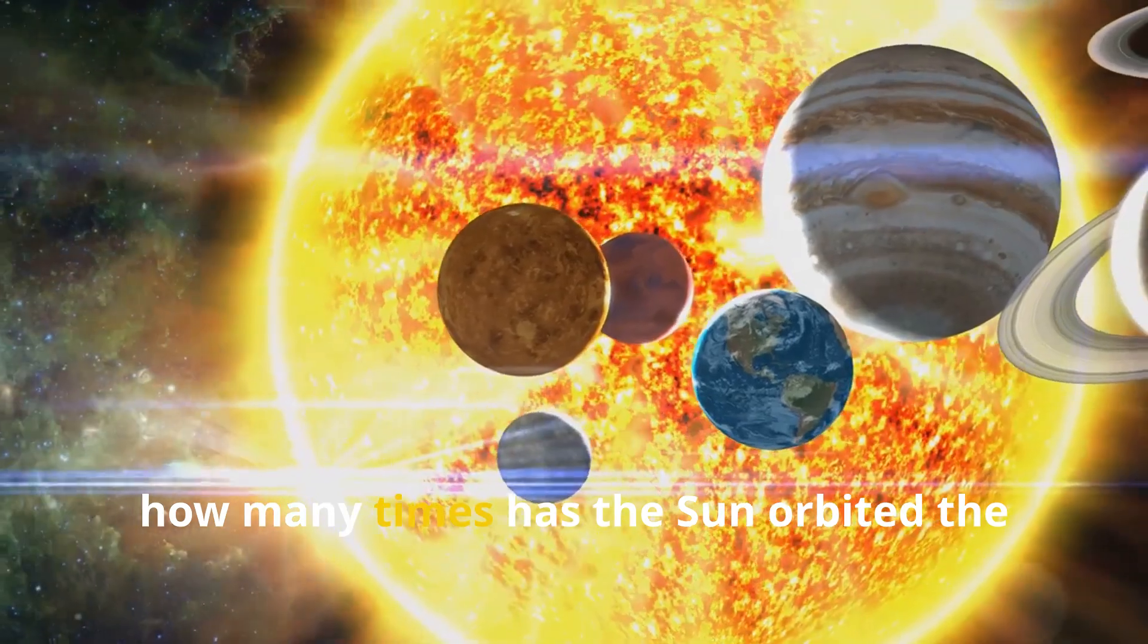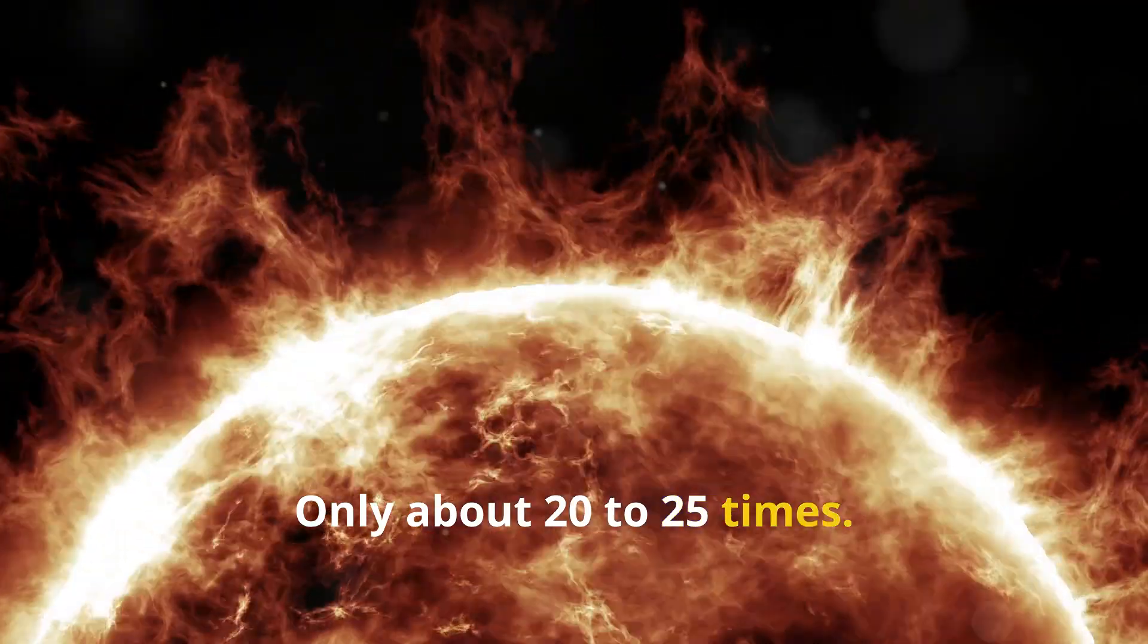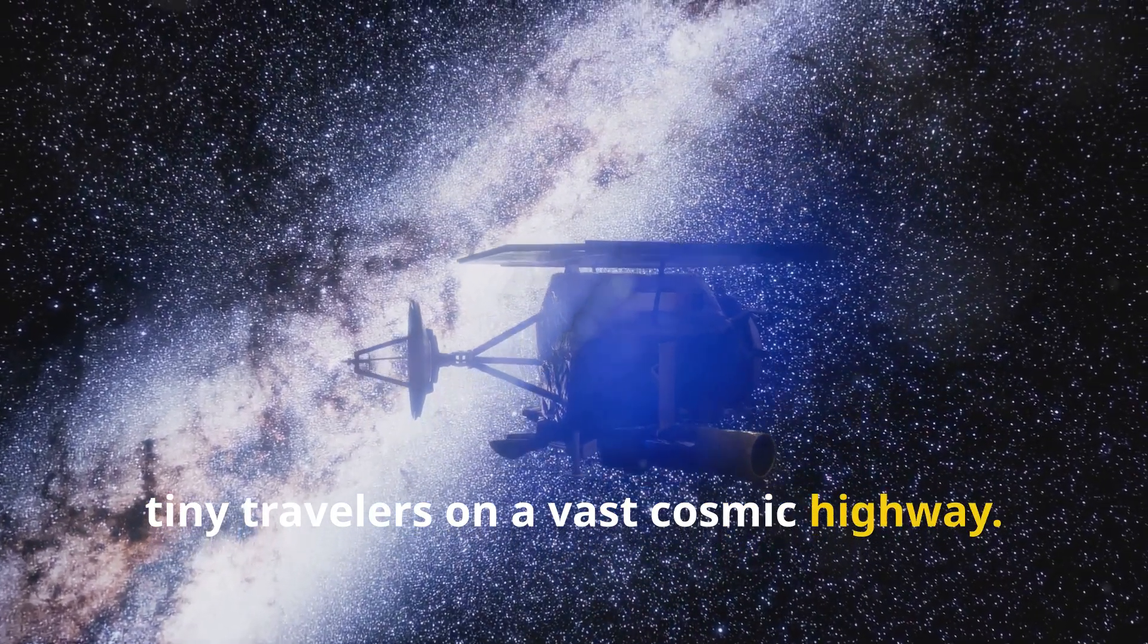So, how many times has the sun orbited the Milky Way since Earth formed? Only about 20 to 25 times. We're still riding our first galactic laps, tiny travelers on a vast cosmic highway.